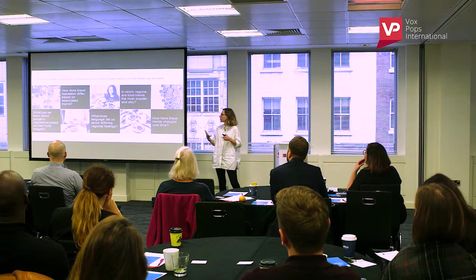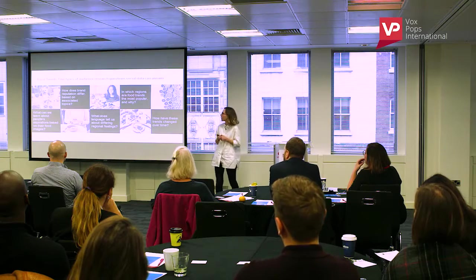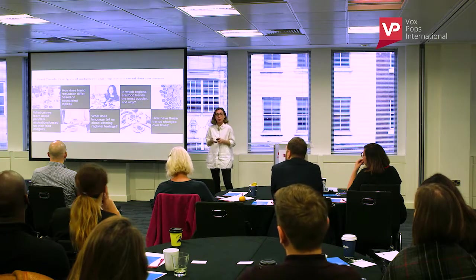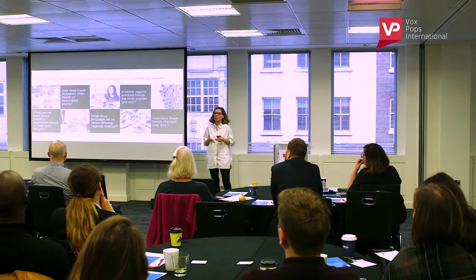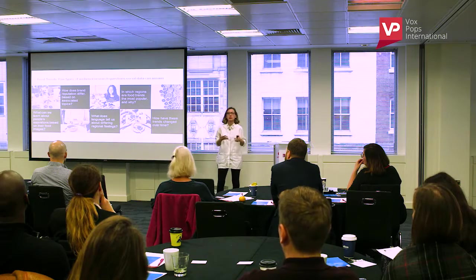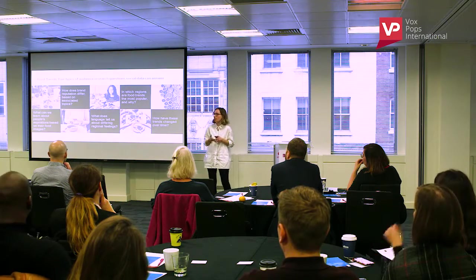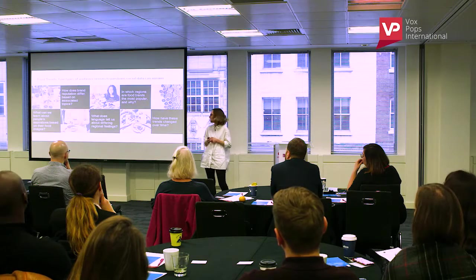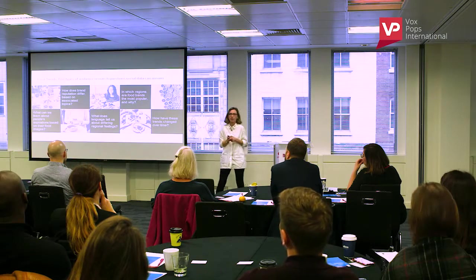The five questions are: How does brand reputation differ based on associated topics in different parts of the UK? In which regions are food trends the most popular and why? What can we learn from people's aspirations from the images they post? What does the language tell us about their attitudes? And finally, how have these things changed over time?